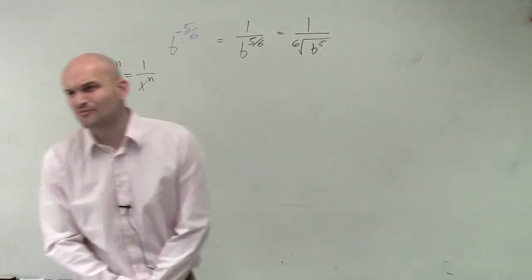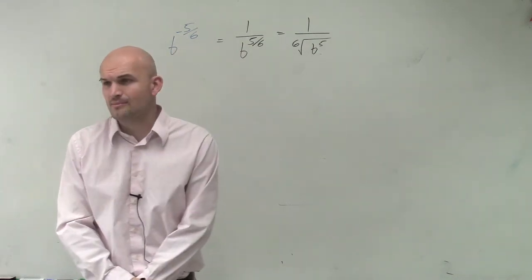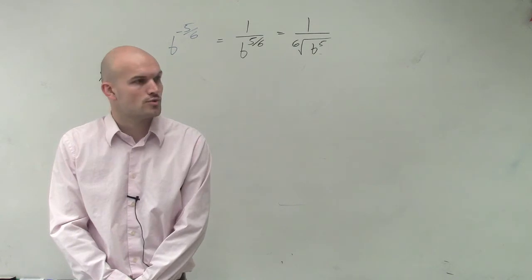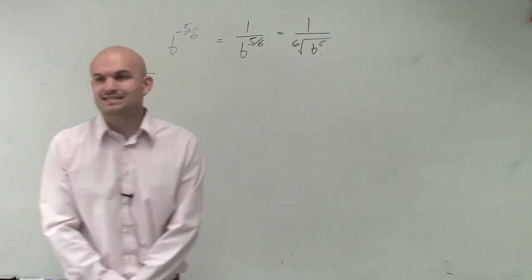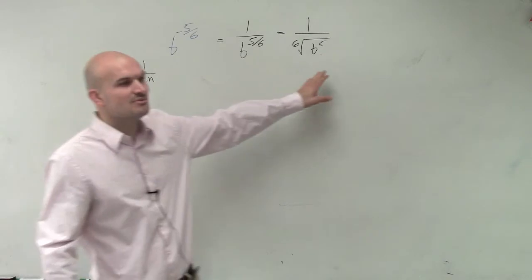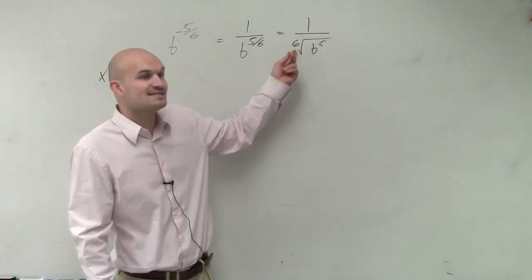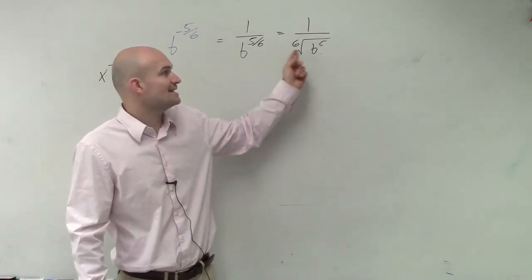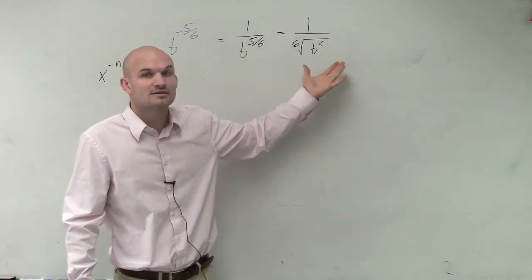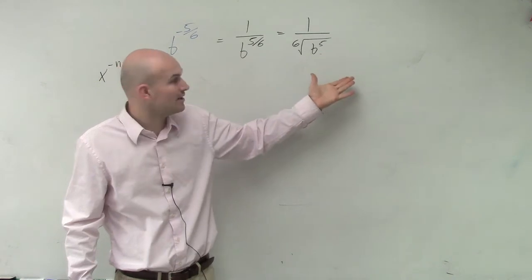Do we ever simplify expressions with a radical in the denominator? No, right? And do you guys remember last class period — if I need to get this simplified, what would I have to multiply by? I need to take the sixth root. To undo that, I need to take the sixth root of something raised to the sixth power.